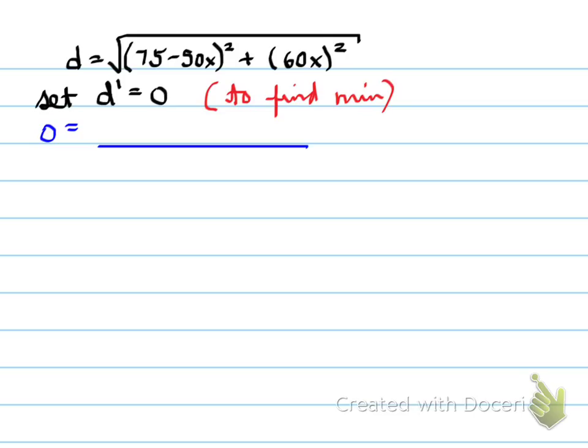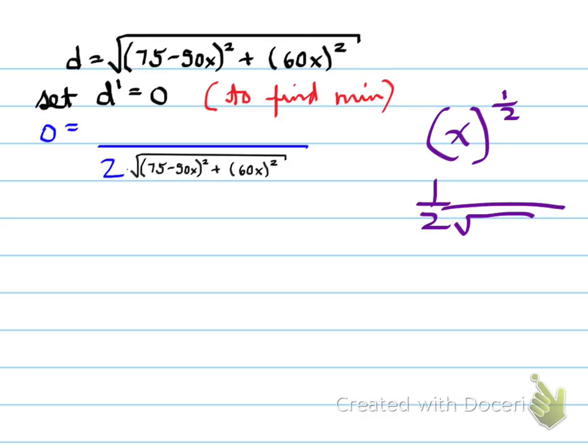In this case, this is the distance formula. Set the derivative equal to 0 and calculate the derivative. To calculate the derivative, when you look at x to the power of 1/2, the derivative of that is 1/2 x to the negative 1/2, which tends to be 1 over 2 times the root. So I have 2 times the original root as the bottom.